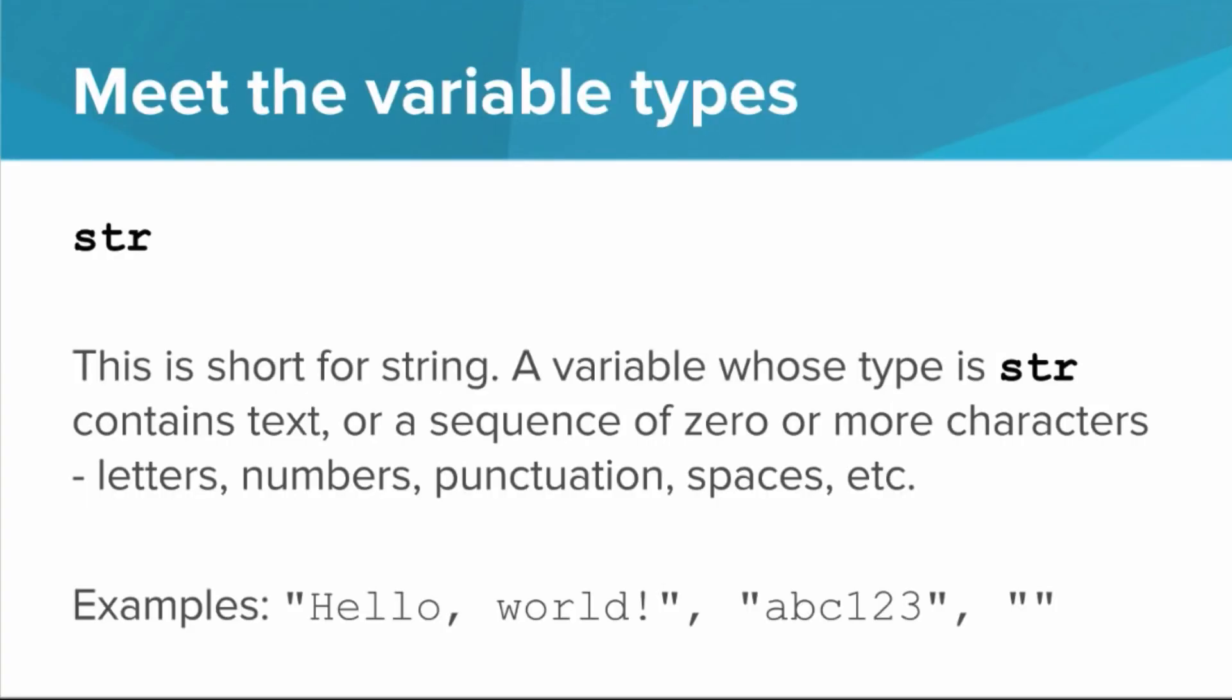So what do these types mean? Str is short for string. A variable whose type is str contains text, or a sequence of zero or more characters. And these characters can be letters, numbers, punctuation, spaces, whatever you can type on your keyboard. So hello world is an example,